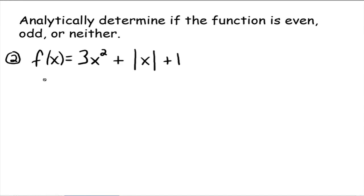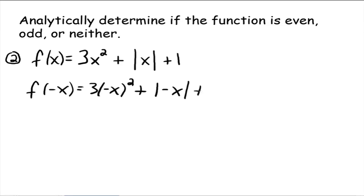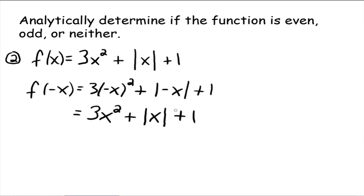Next example: find f of negative x, which equals 3 times negative x squared plus the absolute value of negative x plus 1. Negative x squared is just x squared, so this goes to 3x squared. The absolute value of negative x is just the absolute value of x — it's the same thing. So we get 3x squared plus the absolute value of x plus 1. Is this the same function we started with? Yes, so f of negative x equals f of x, therefore f of x is even.